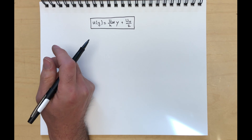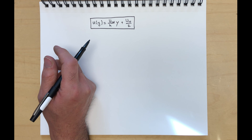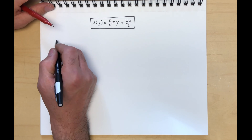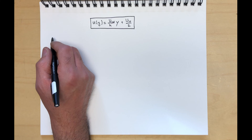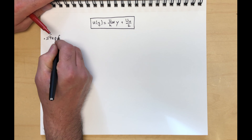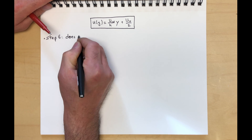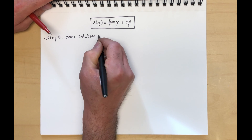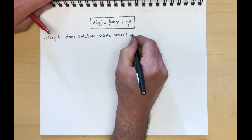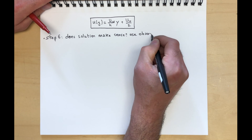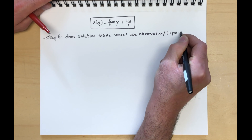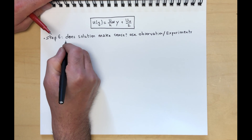Step 6: verify whether the solution makes sense. Use observation and experiment to verify that the derived solution is physically reasonable.